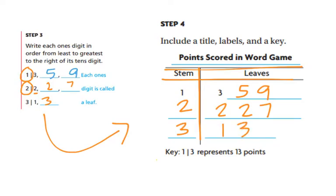Notice I try to line up my numbers so it's easy to look at. So it says in step four that we would include a title, like points scored in word game, our labels, stem leaves, and our key, one slash three represents 13 points. So this is what the final product is going to look like.